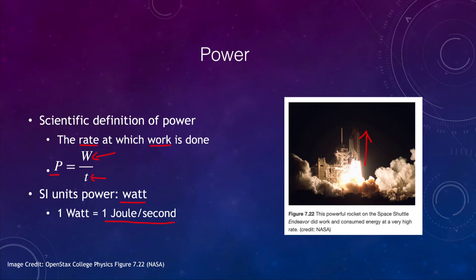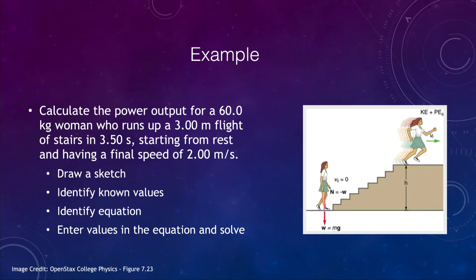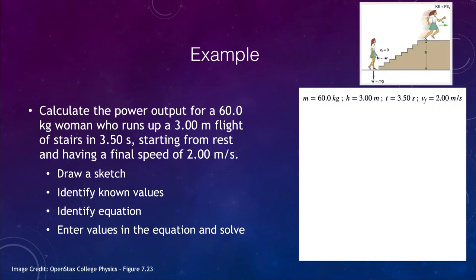So let's look at some examples here to try to go over this. What we have is the first example here, the power of a woman running up the stairs. So running up a three meter flight of stairs in three and a half seconds, starting from rest. So she's at rest at the bottom there and runs up to the top of the stairs. Let's put everything together. We have our sketch and we can look at our known values. What do we know here?